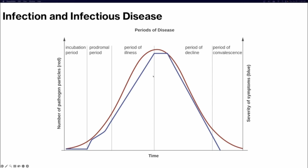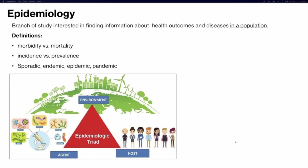Know the periods of disease and their relationship to the number of pathogenic particles. During the incubation period, after first contact with a pathogen, particle numbers are low and you're not experiencing signs and symptoms. As the pathogen replicates, particles increase and you enter the prodromal period with general signs and symptoms. The period of illness brings classic signs and symptoms. Then your immune system catches up, leading to the period of decline where pathogenic organisms decrease — though your immune system can be overwhelmed here, making secondary infection possible. The period of convalescence is when you've successfully cleared the infection.